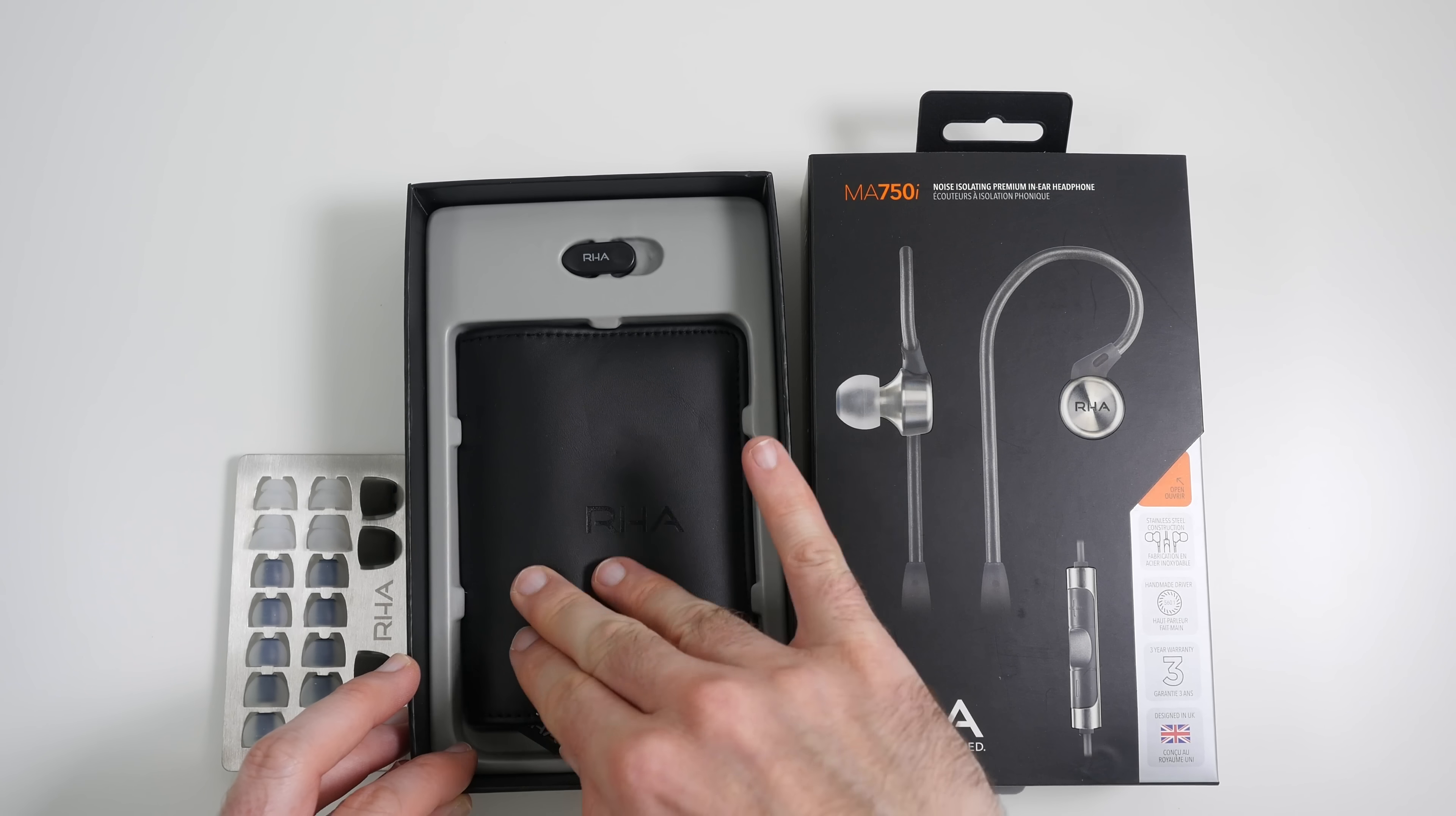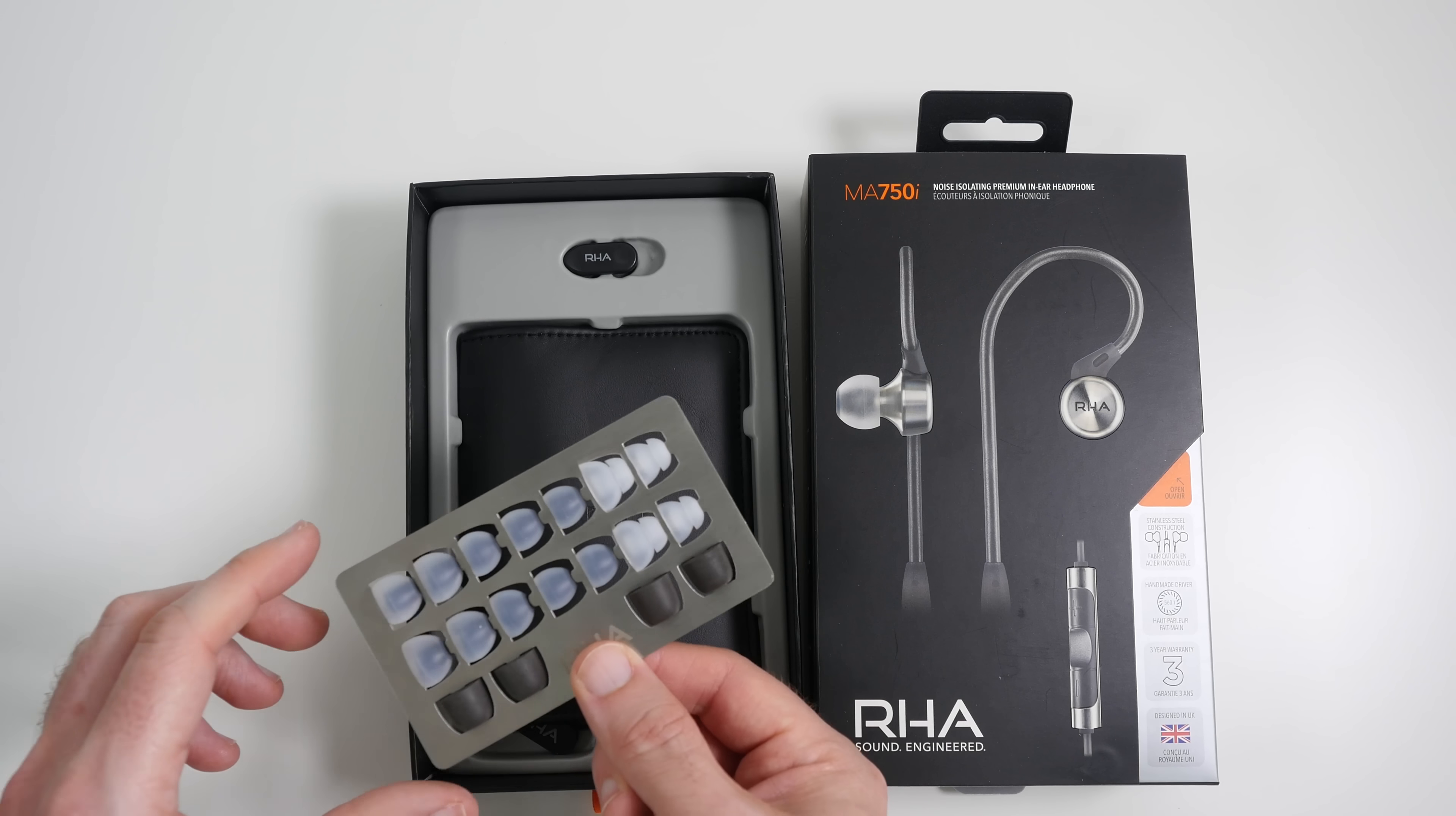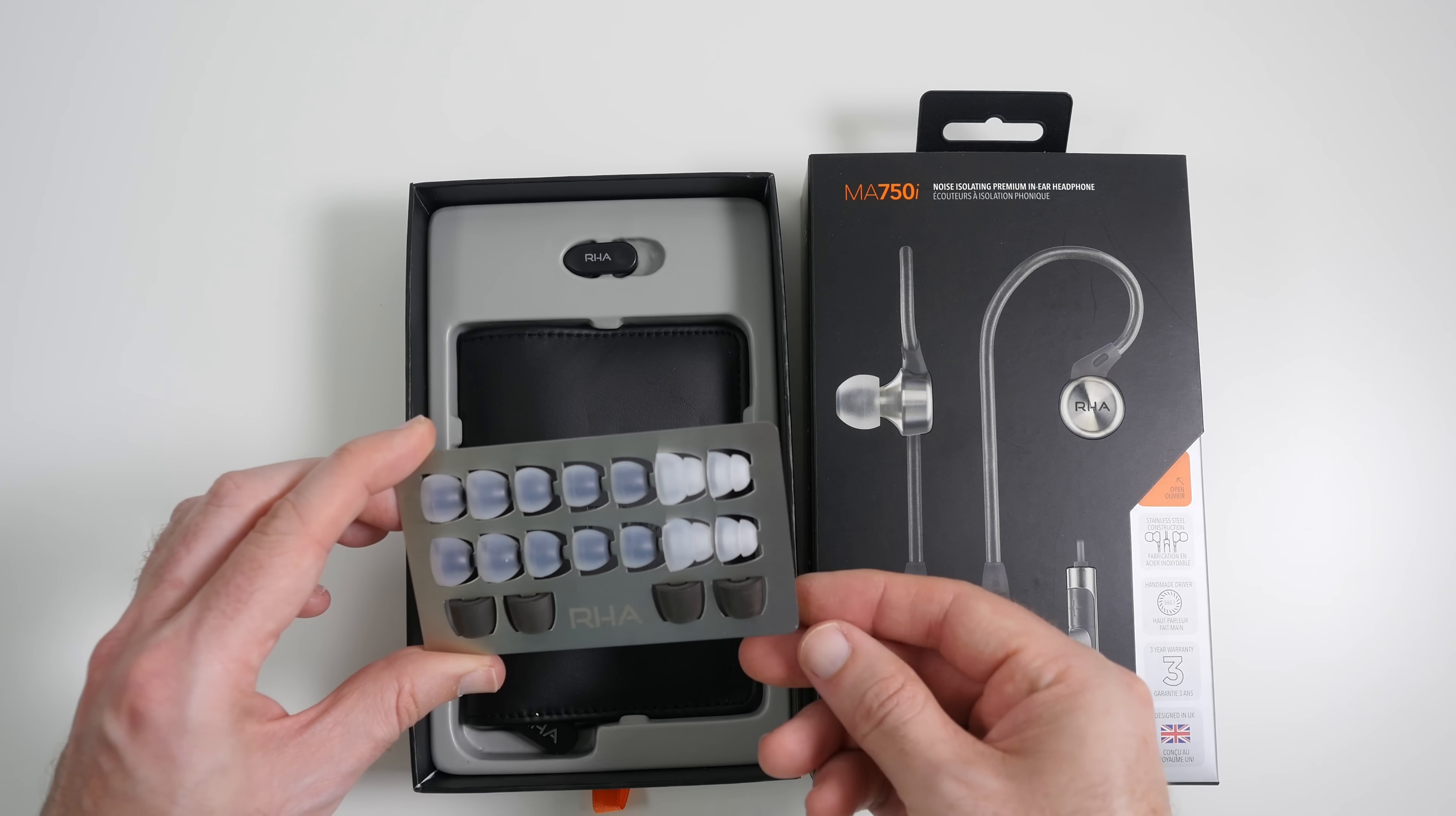Inside this portion of the packaging we've got a really nice carry case that's really cool. We've also got a clip here so you can clip the cable to your clothing for example. And then we've got this metal plate, this is very nice indeed. This has got all the different silicon ear tips and some foam ear tips as well.